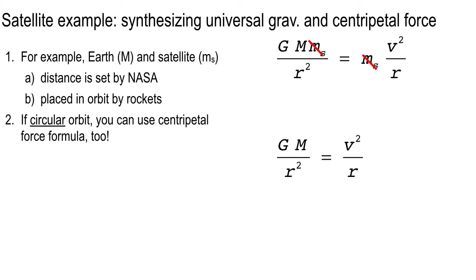Simplifying further, there are R's on both sides: cancel one R and get GM over R equals V squared. If you know the R you want, you can figure out the required V and design your rockets accordingly. If you know the speed you want, you can figure out how big R needs to be — how high to park your orbit.